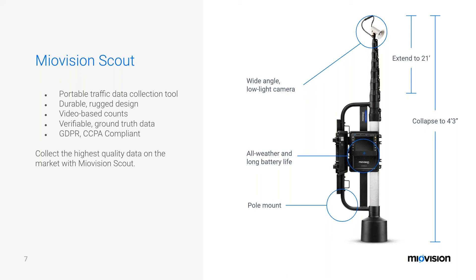The Scout features a sturdy pole mount to get the best angle in the roadway — the Scout extends up to 21 feet in the air to provide a bird's-eye view, so you don't have to worry about occlusion. If a car, bus, or truck stops in front of where you're capturing, you don't have to worry about that data being missed, because the Scout is built to withstand those anomaly situations where data quality might otherwise be in question.